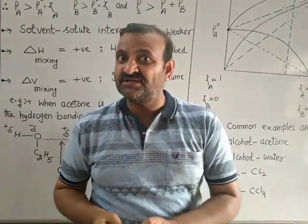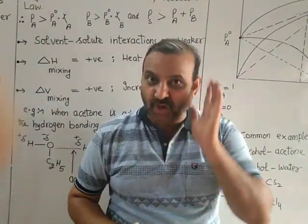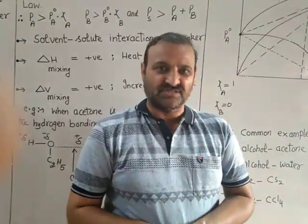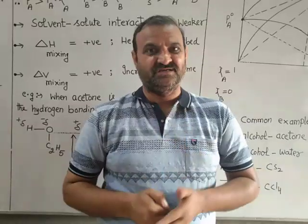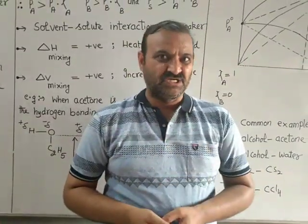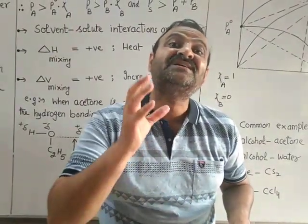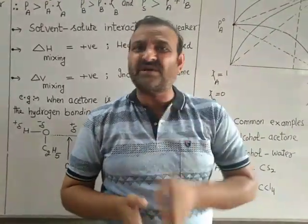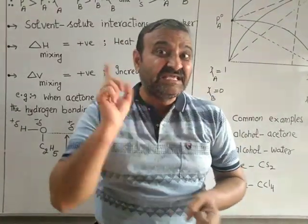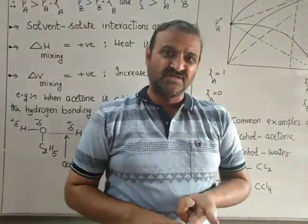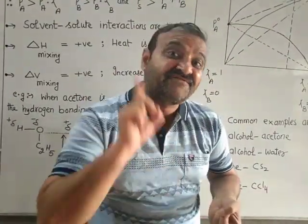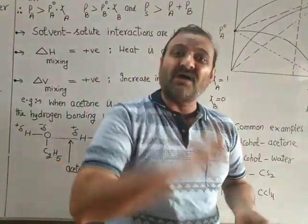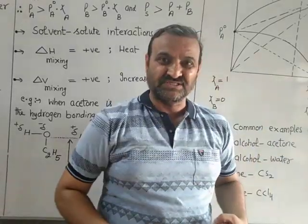The solution is non-ideal. No component is purely solvent or solute. We find the vapor pressure of each component by experiment, and also find it by using Raoult's law. If the vapor pressure of a component determined experimentally is greater than the vapor pressure of the same component determined by using Raoult's law, such non-ideal solutions are called non-ideal solutions with positive deviations.